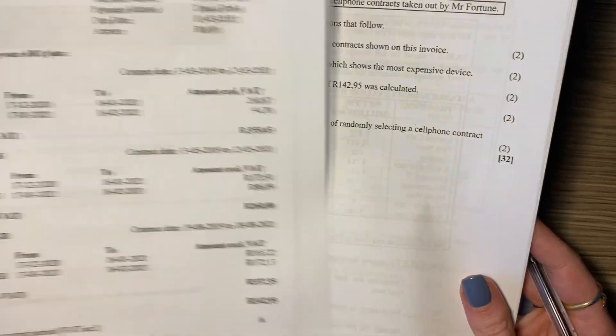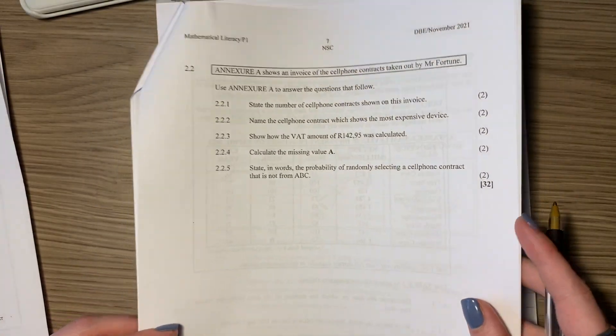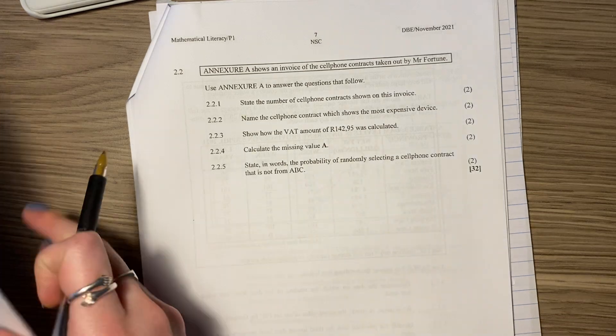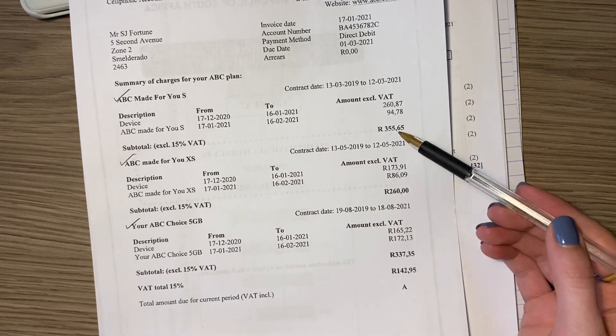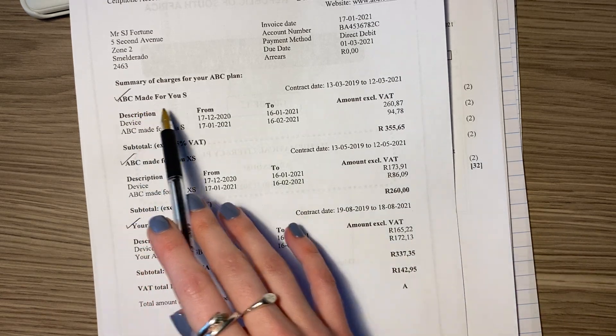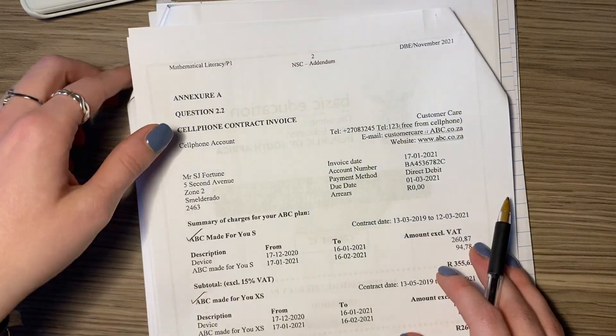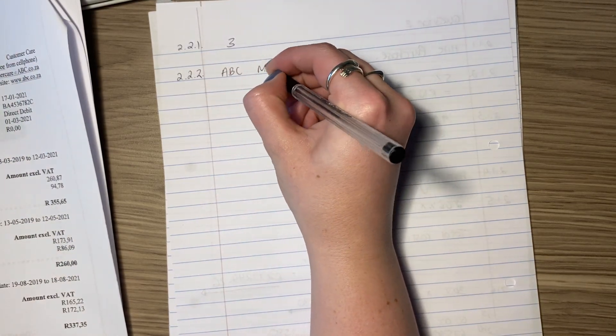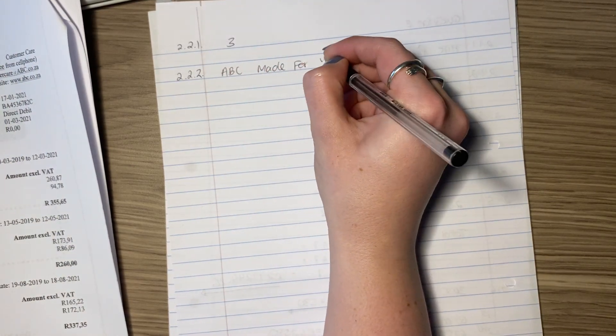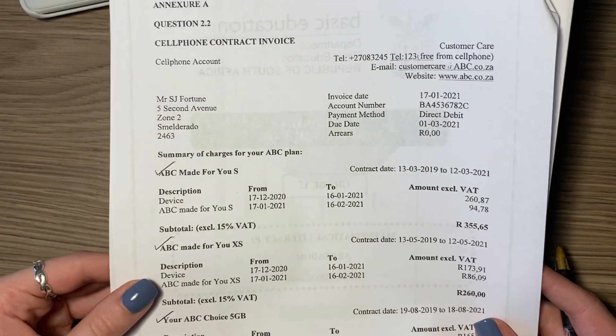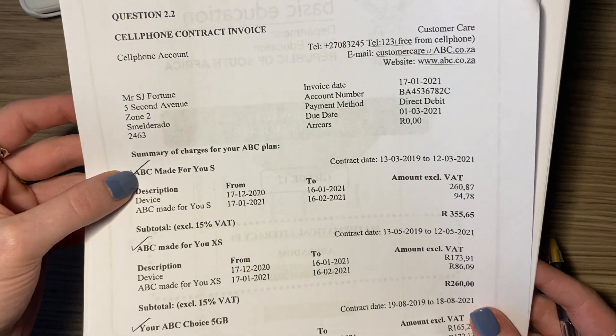Name the cell phone contract which shows the most expensive device. So which one of these is the most expensive? That one's 355, it's more than that and more than that, so the most expensive one is ABC Made For You S. It's quite an interesting name. I'm not sure what the S stands for, but it probably means small.